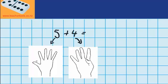So now it's easy to work out what 5 plus 4 equals. You can see I've got 9 fingers up. So 5 plus 4 equals 9.